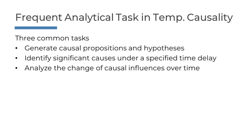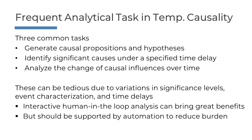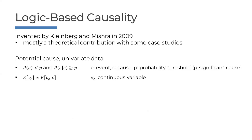Frequent analytical tasks in temporal causality are: first, testing general causal propositions and hypotheses; second, identifying significant causes under a specified time delay; and third, analyzing the change of causal influences over time. This can be tedious due to variation in significance levels, event characterization, and time delays. You really can't do this fully automatically — you need a human in the loop to figure out what really matters, but it should be supported by automation to reduce the burden.